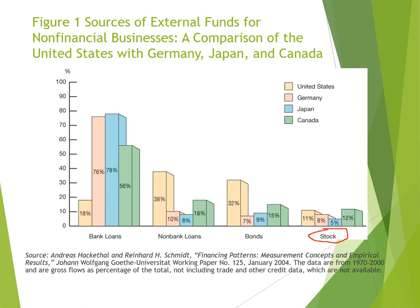Canada has the highest stock market percentage at 12%, which is still relatively low. Bonds in Canada account for 15%, compared to 9% in Japan and 7% in Germany. However, the US bond market is well-structured, responsible for 32% of external financing. In Canada, non-bank loans account for 18% of external financing.